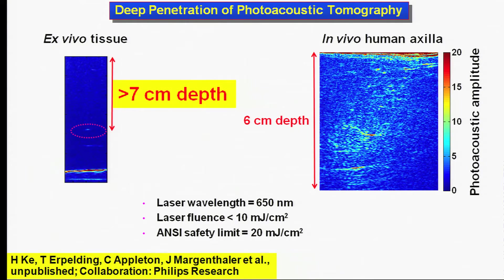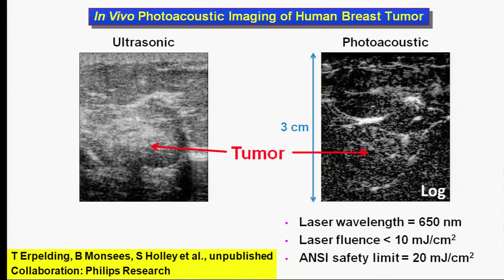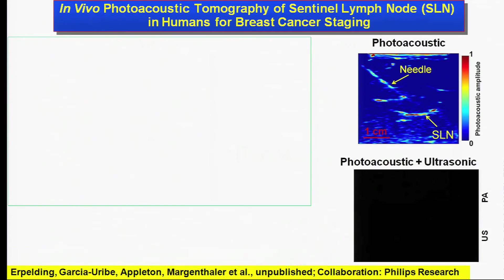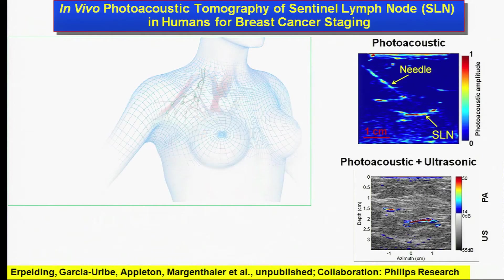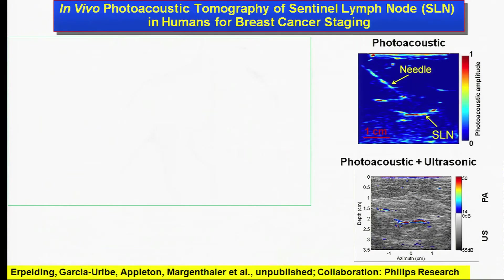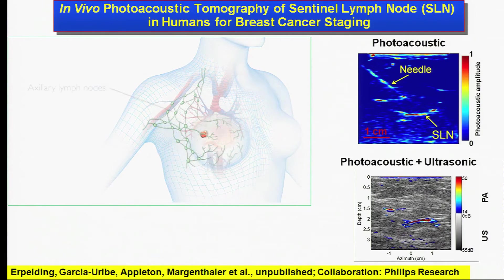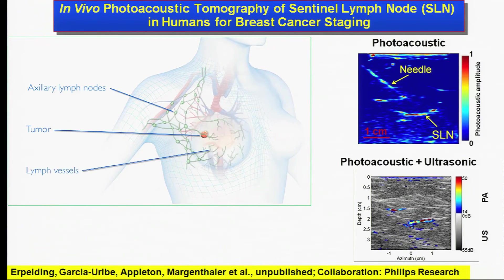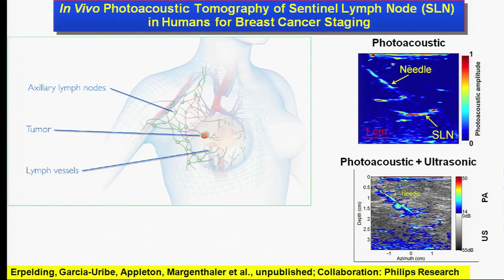Next, I'll highlight selected images in the order of penetration or resolution. The clinical system provides up to 7 centimeters of penetration with safe laser exposure. A 3-centimeter deep breast tumor was imaged in vivo by both ultrasonography and photoacoustic tomography.